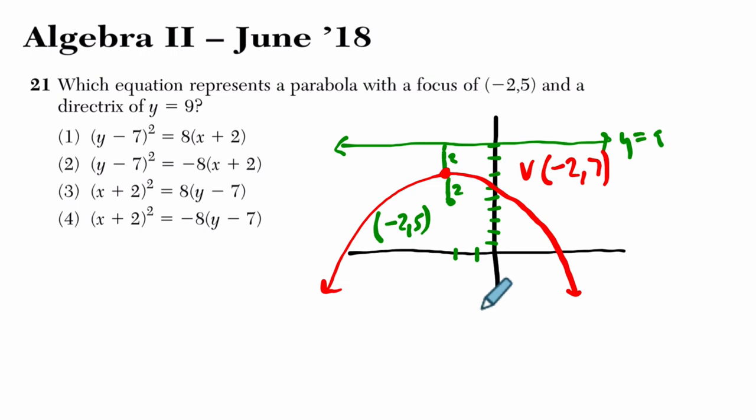Now, this information helps us because in general, you have (x - h), where h is the x-coordinate of the vertex, squared. It'll equal 4 times p. The absolute value of p is this distance between the focus and vertex, times (y - k).